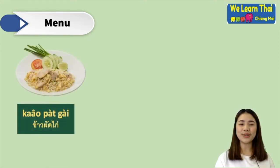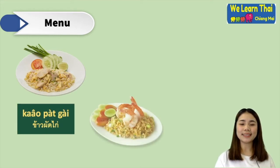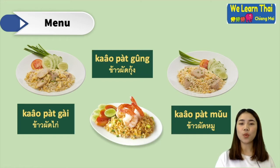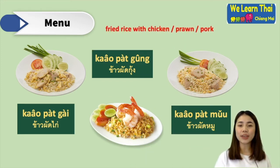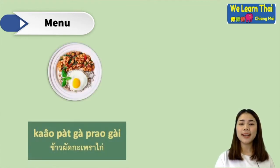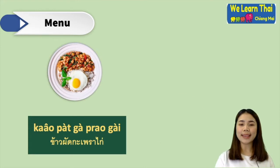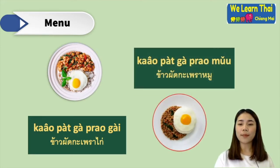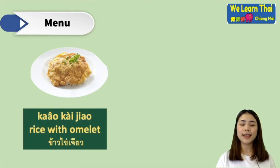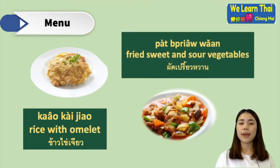Let's talk about some menu items. The first one is ข้าวผัดไก่, ข้าวผัดกุ้ง, ข้าวผัดหมู. The word ข้าวผัด means fried rice and you can specify with some meat like chicken, shrimp or pork. And the next menu: ข้าวผัดกะเพราไก่, ข้าวผัดกะเพราหมู. And the next one: ข้าวไข่เจียว — rice with omelette. ผัดเปรี้ยวหวาน — fried sweet and sour vegetables.